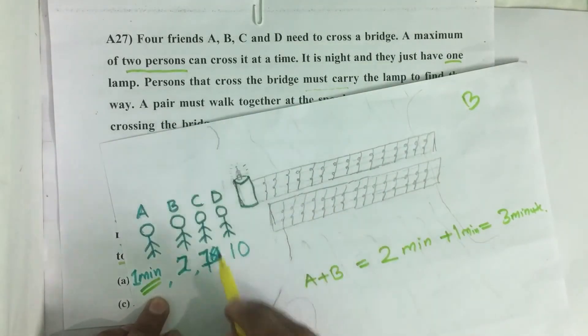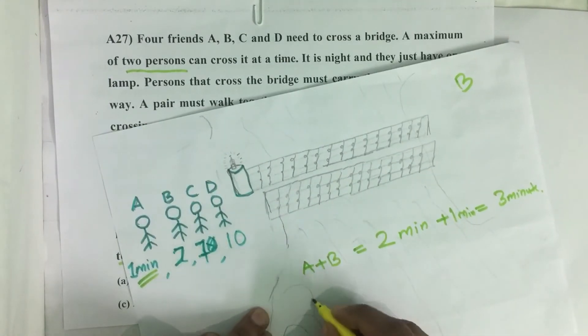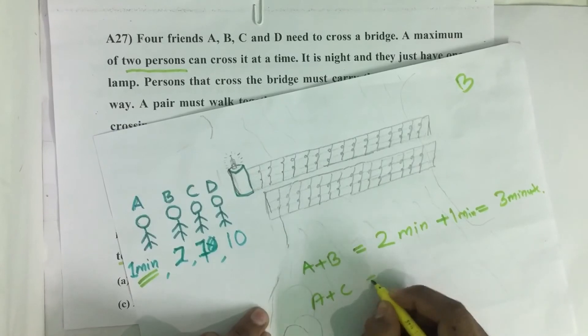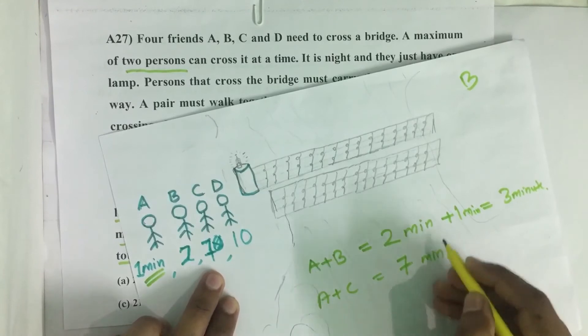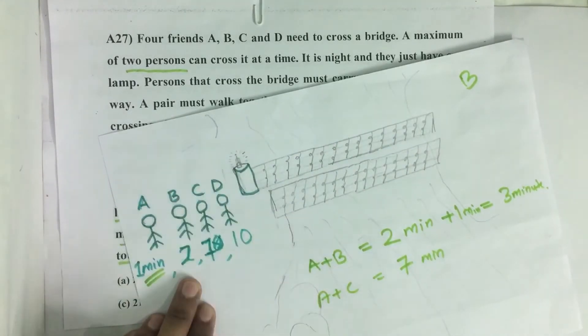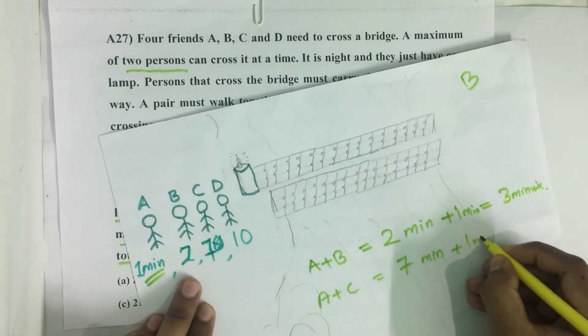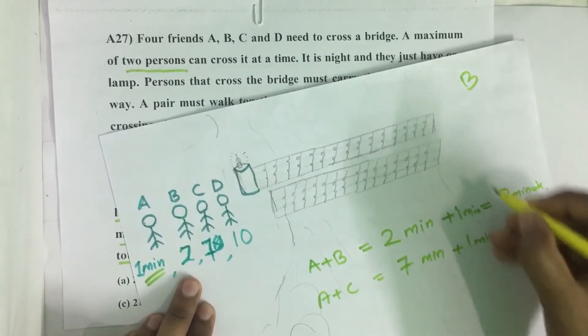Then again A plus C takes seven minutes. C has to come back to accompany D, so that is one minute, then total eight minutes. C also reached here.